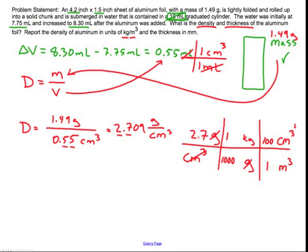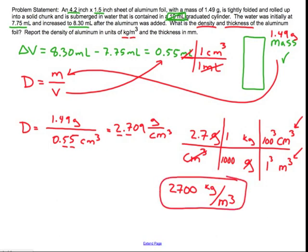But because of the cubed here, remember I need to also cube the conversion factor. So it's 100 cubed and then 1 cubed, of course, remains 1. And if I do the math out here, I'm going to get 2,700 kilograms per meter cubed. And that is my final answer for the density. Notice I still have 1, 2 significant figures.